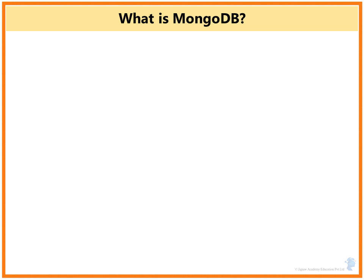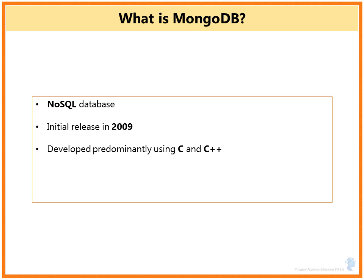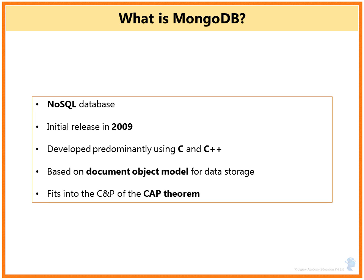What is MongoDB? It's a NoSQL database, which was initially released in the year 2009 and was developed mainly using C and C++. It's based on a document object model for data storage. It fits into the CAP theorem, specifically incorporating C and P.